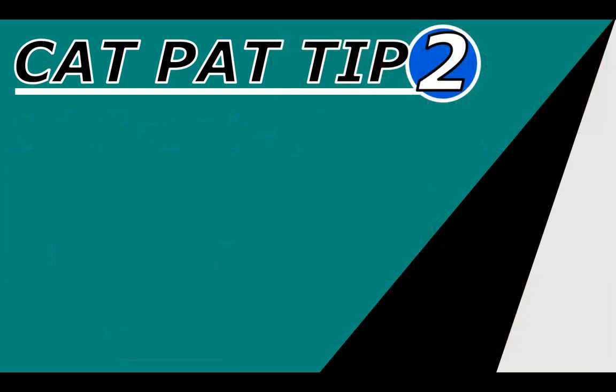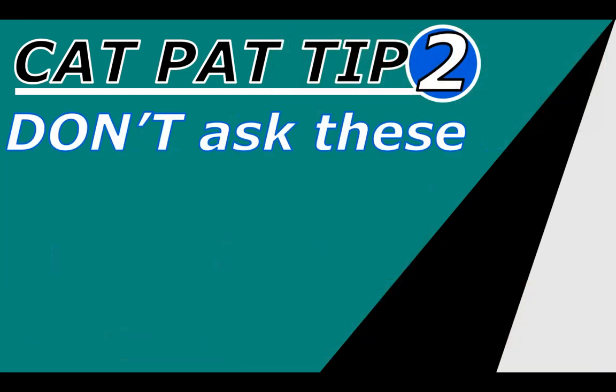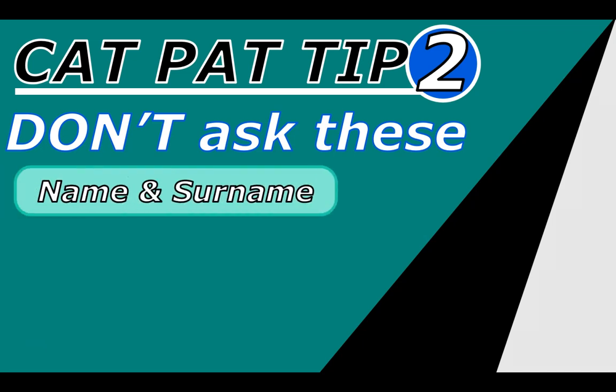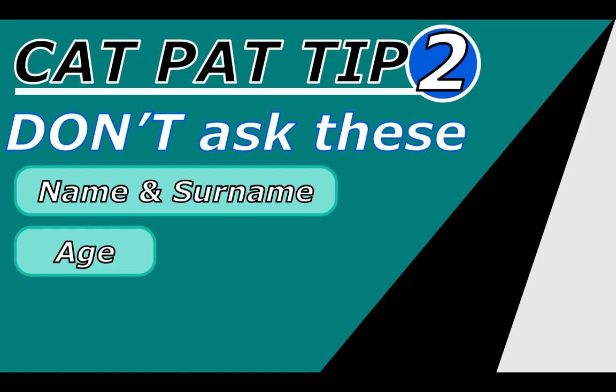CatPAT tip number two: there are certain questions I do not recommend asking. Please don't ask for name and surname — you're not going to do any statistics on it and people tend not to like giving personal details. They like to be anonymous and are more likely to be honest when anonymous, so there's no real point. Also don't ask for their age — I'll explain what a better option is in the next tip.